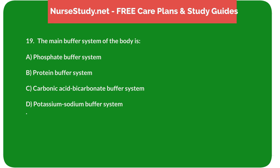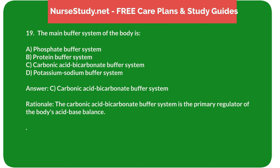Question 19: The main buffer system of the body is: A. Phosphate buffer system. B. Protein buffer system. C. Carbonic acid bicarbonate buffer system. D. Potassium-sodium buffer system. Answer: C. Carbonic acid bicarbonate buffer system. Rationale: The carbonic acid bicarbonate buffer system is the primary regulator of the body's acid-base balance.